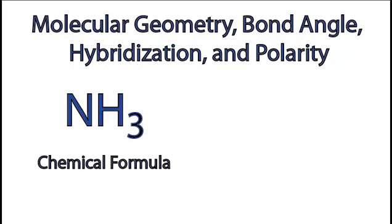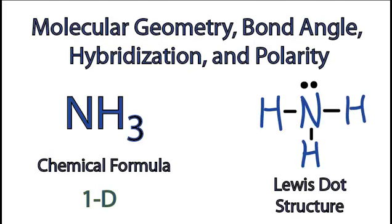So for NH3, that's kind of a one-dimensional structure. We know how many of each type of atoms we have, but we really don't know their arrangement. When we draw the Lewis structure, we now have a better idea of how the atoms and valence electrons are oriented. We've moved from one dimension of the chemical formula to the two-dimensional Lewis dot structure.